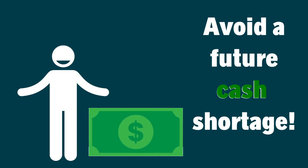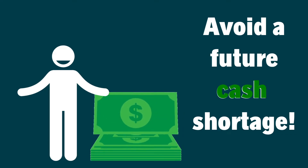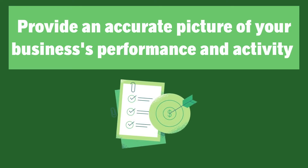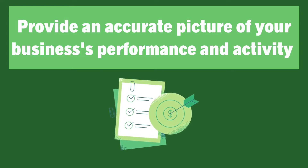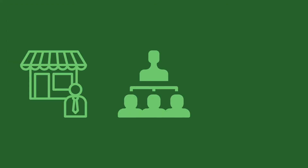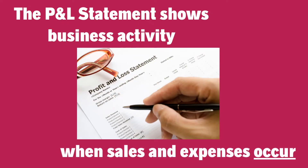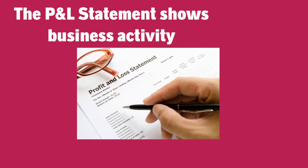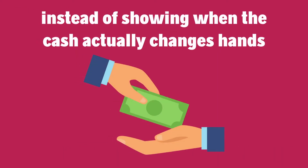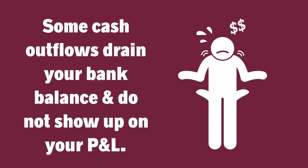The main purpose of accounting is to provide an accurate picture of the performance and activity of a business to owners, managers, and the government. Because of this, the P&L is designed to show business activity when sales and expenses actually occur, rather than cash flows — when the cash actually changes hands. So there are almost always some cash outflows that drain your bank balance that don't show up on your P&L.